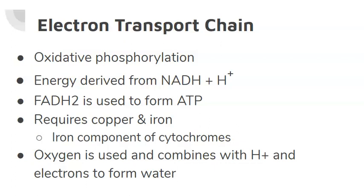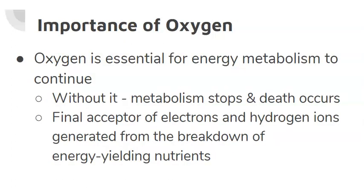The electron transport chain involves the passage of electrons along a series of electron carriers. As electrons are passed from one carrier to the next, small amounts of energy are released. NADH+ and FADH2 supply both hydrogen ions and electrons to the electron transport chain. The term oxidative phosphorylation is used for this metabolic process. The energy derived from NADH+ and FADH2 is transferred to ADP plus a phosphate to form ATP. This process requires the minerals copper and iron, because iron is a component of the cytochromes, which are the electron transfer compounds, and copper is a component of an enzyme. Oxygen is essential for energy metabolism to continue because without oxygen, metabolism stops and death occurs.